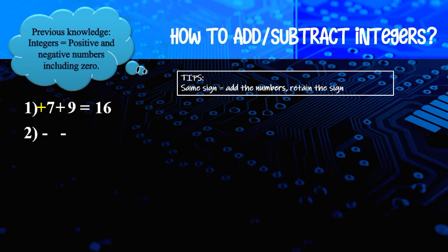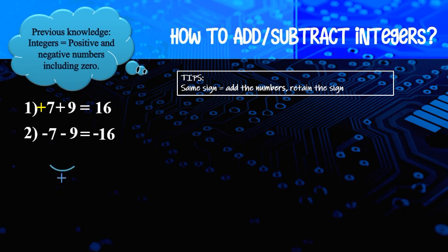Another example: negative 7 minus 9. We look at the sign — negative, negative — same sign. So even though this is a minus, do not subtract the number. The tip is: same sign, you plus the number. 7 plus 9 equal to 16. Now, is the answer positive or negative? Retain the sign — both negative — so the answer is negative 16.